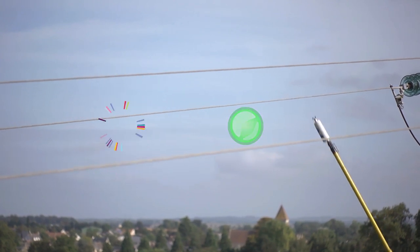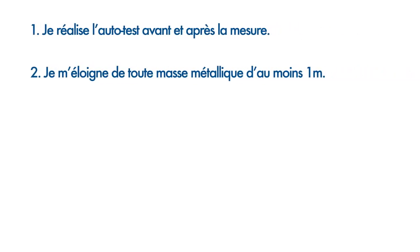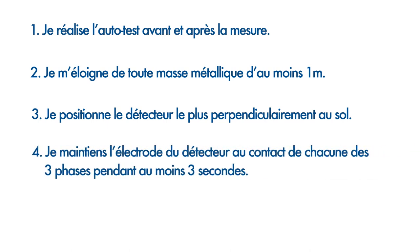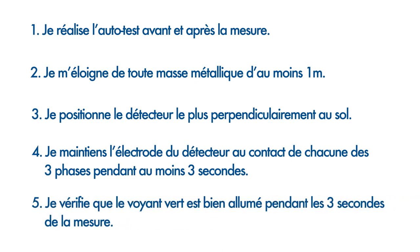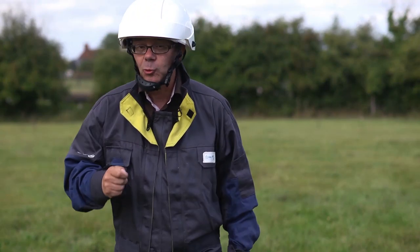In summary, to perform a good VAT: I do the auto-test before and after the measure. I stay at least 1 m away from the metallic mass. I position the detector as perpendicularly to the ground as possible. I maintain the detector in contact with each of the 3 phases for at least 3 seconds and verify that the indicator light is on during those 3 seconds. But this is not all, because there are also particular cases that I invite you to discover together.